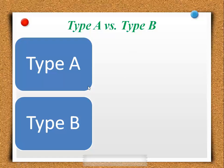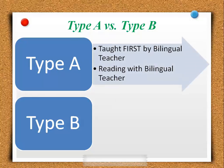In order to read that schedule, you need to understand the difference between a type A class versus a type B class. A type A class refers to a class that is first taught by a bilingual teacher or a Korean teacher. You can also think about it as: if the bilingual teacher or Korean teacher teaches the reading part of the textbook, then that class will be considered type A.